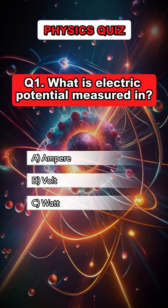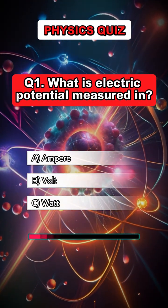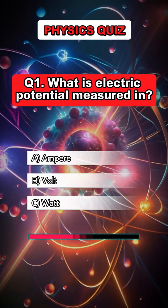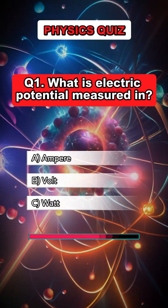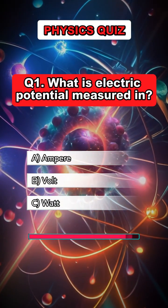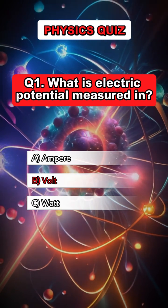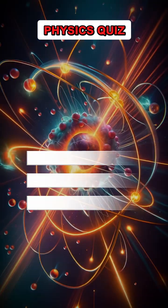Question 1. What is electric potential measured in? Answer. B. Volt.